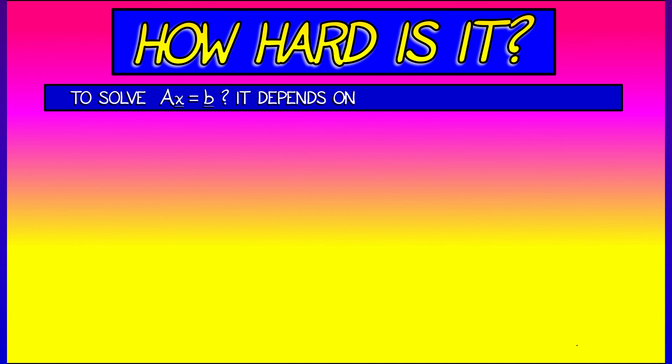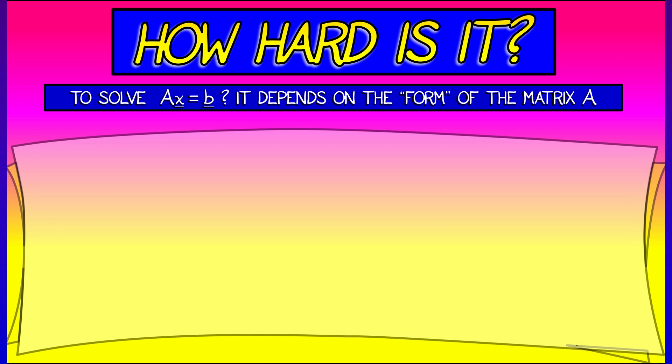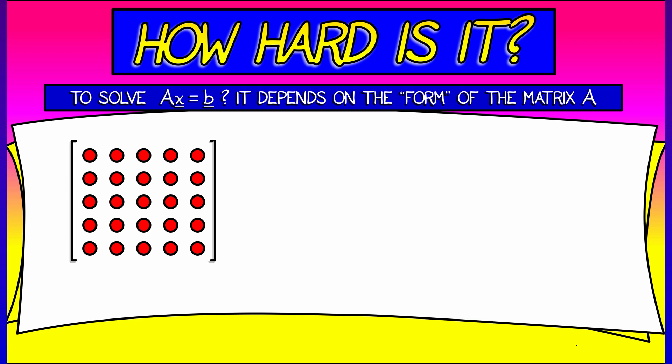Let's think about the difficulty as a function of the form of the matrix A. The bad news is that in general, for a matrix A that you're trying to deal with, it's just too hard. It's really tough to solve AX equals B.